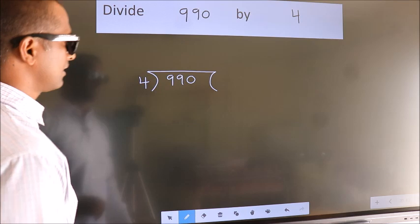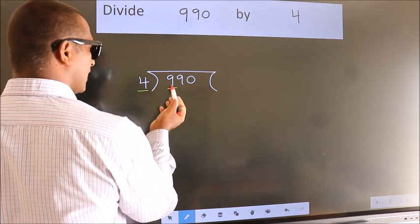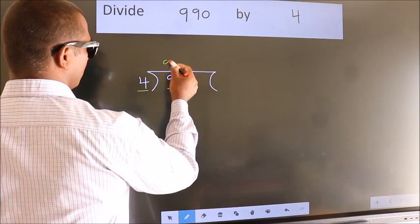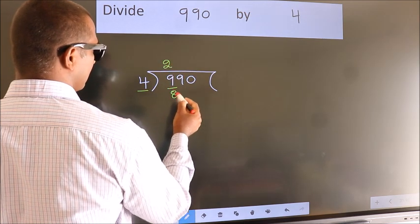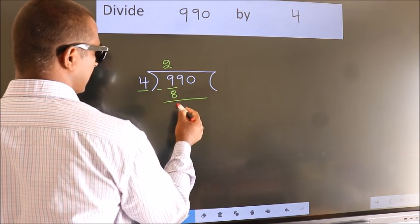Next. Here we have 9, here 4. A number close to 9 in the 4 table is 4 2s 8. Now we should subtract. We get 1.